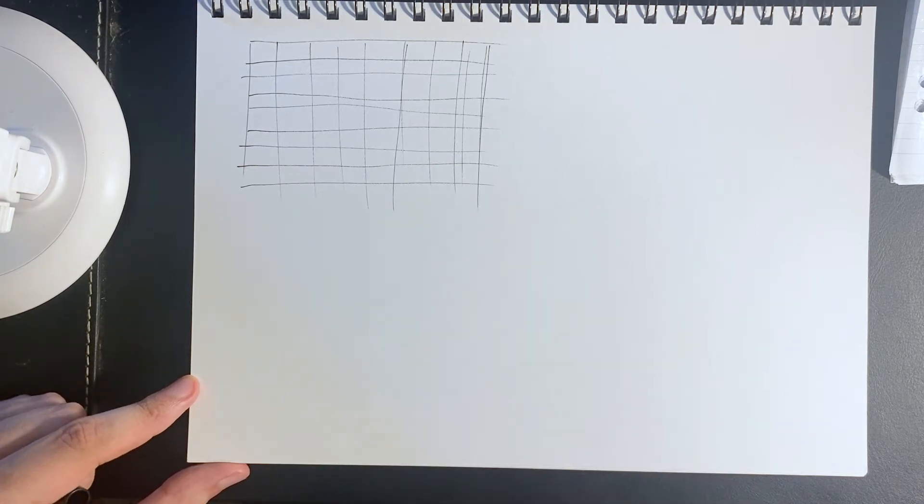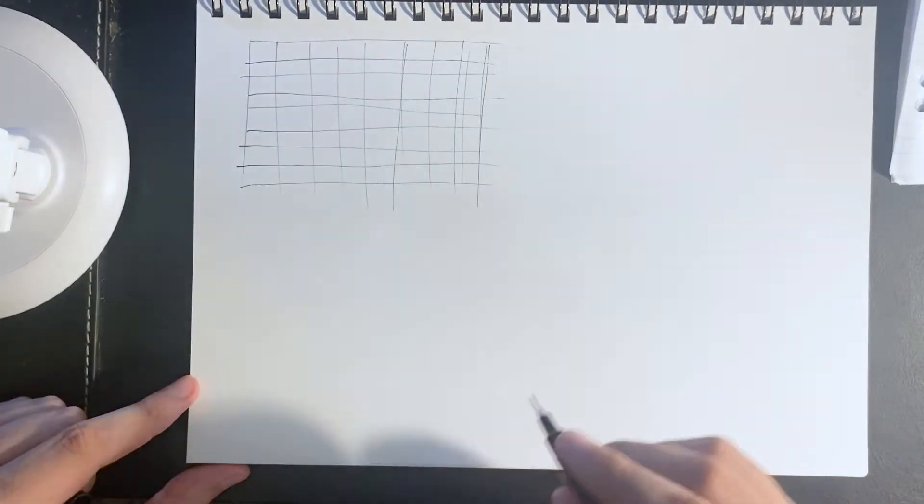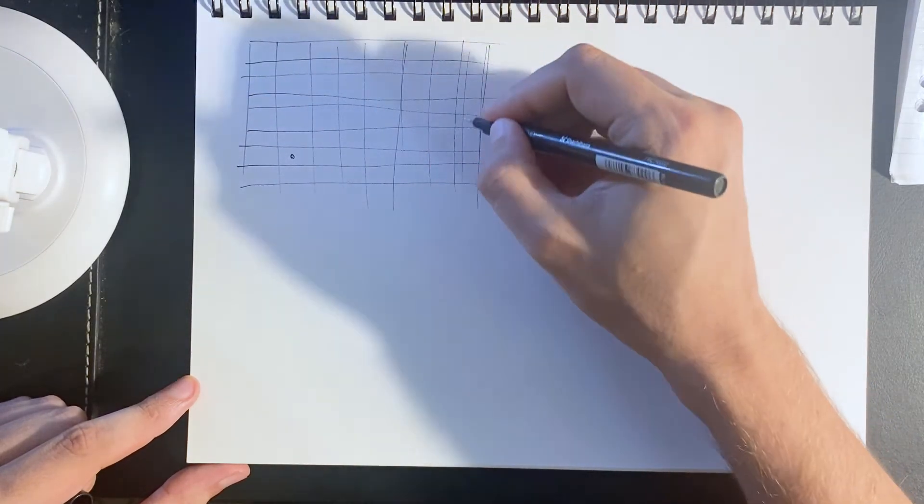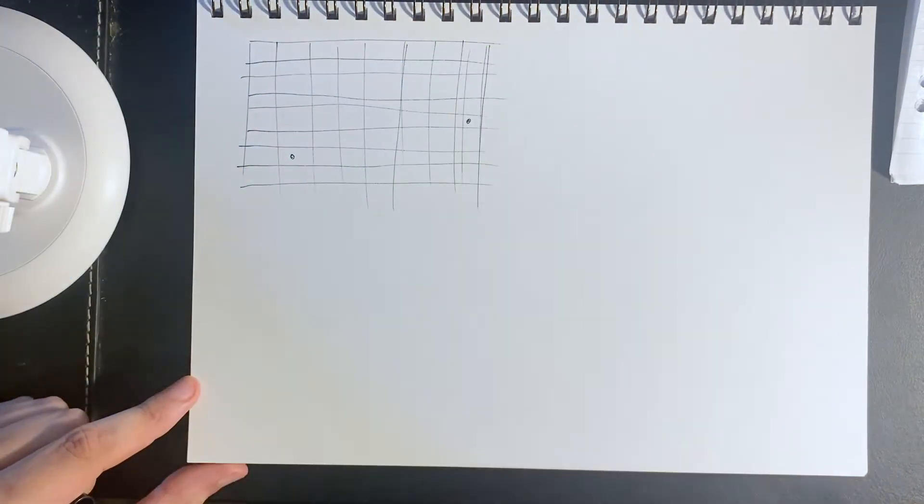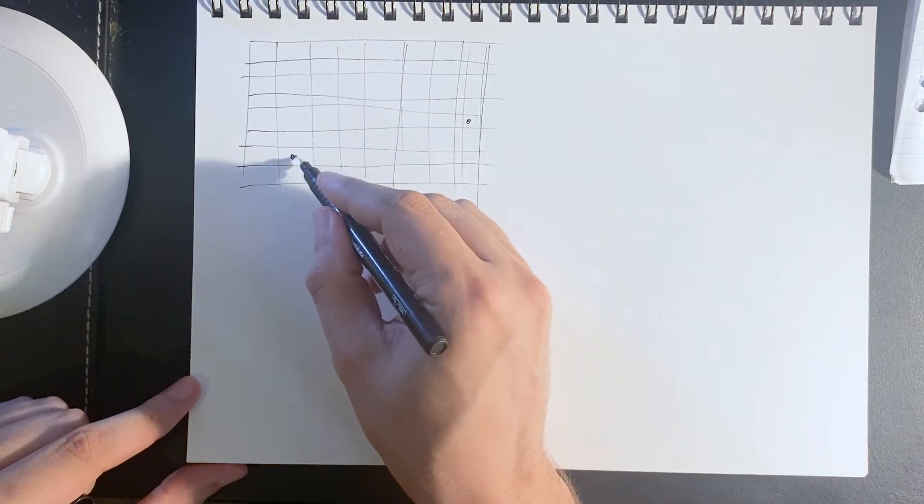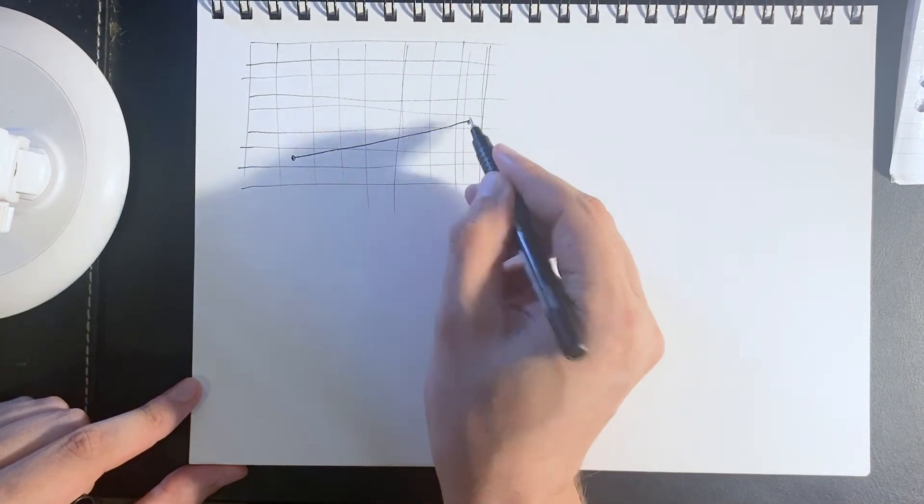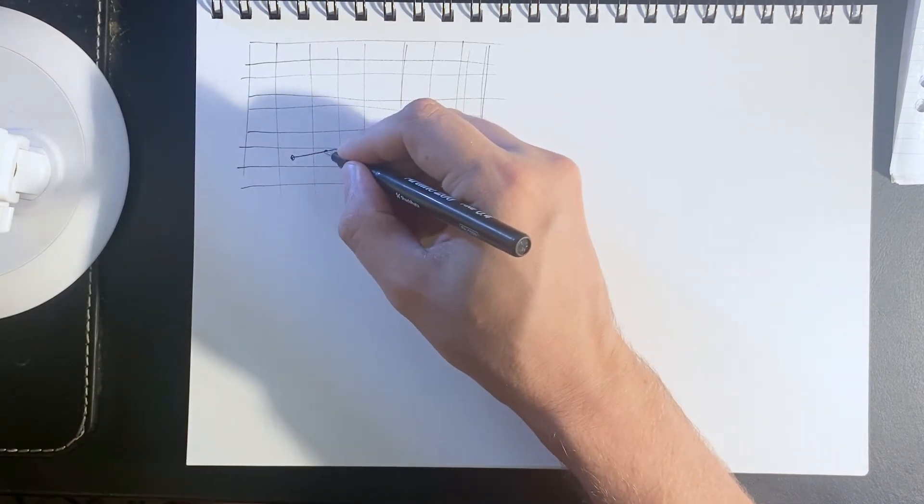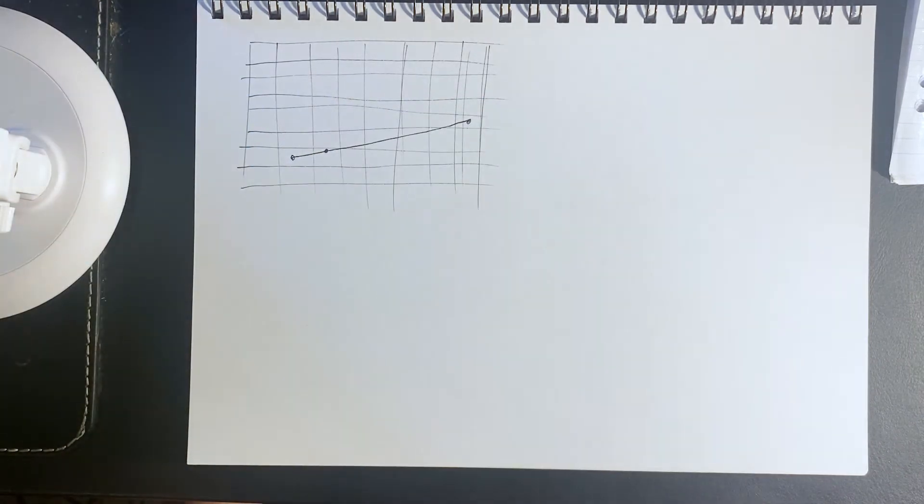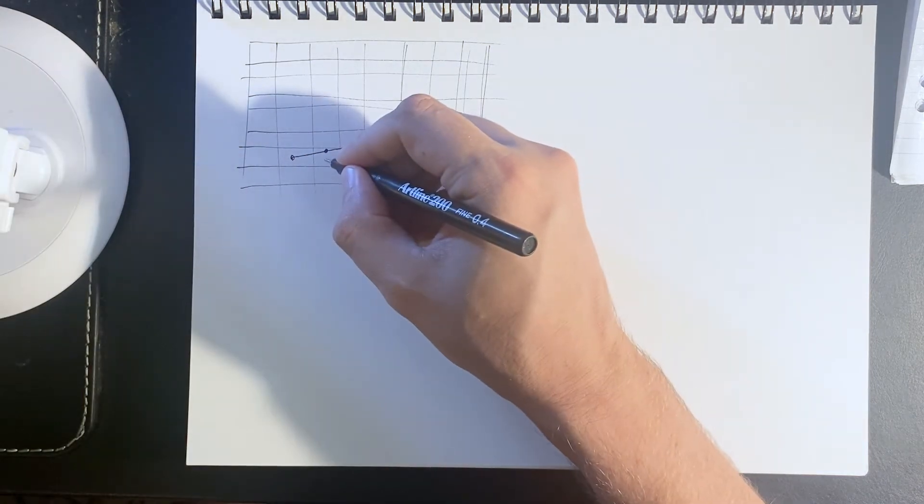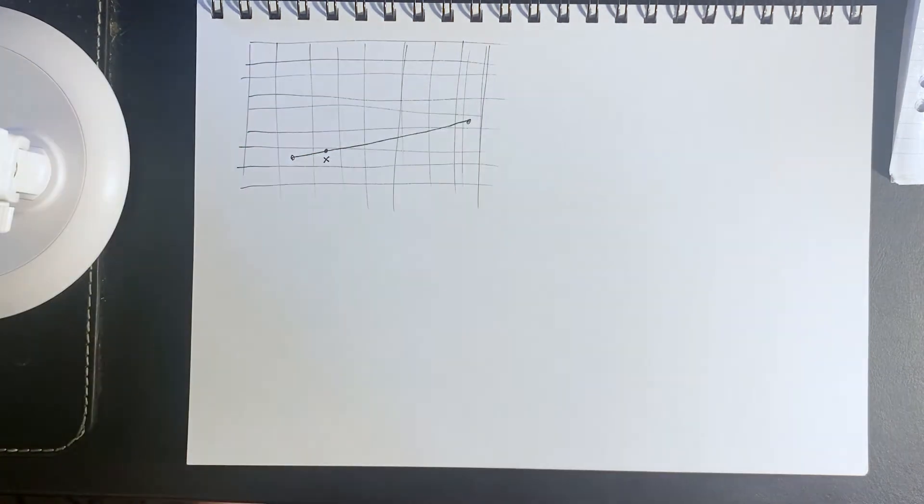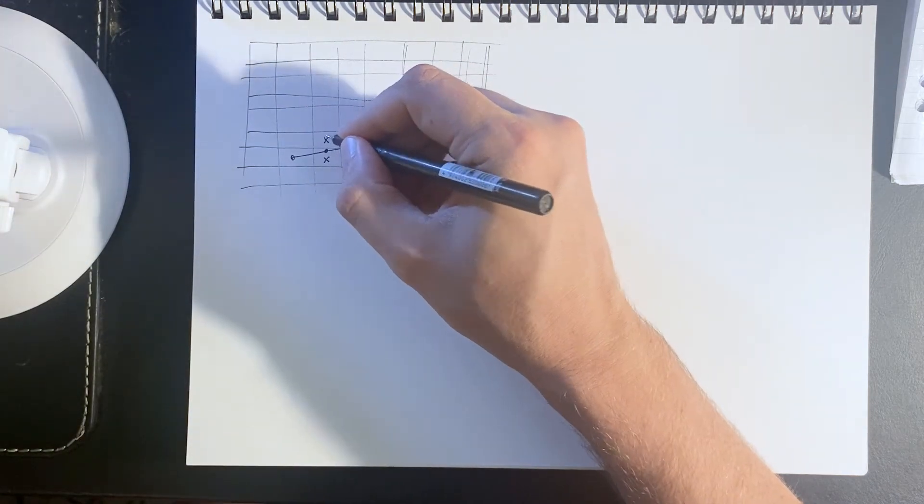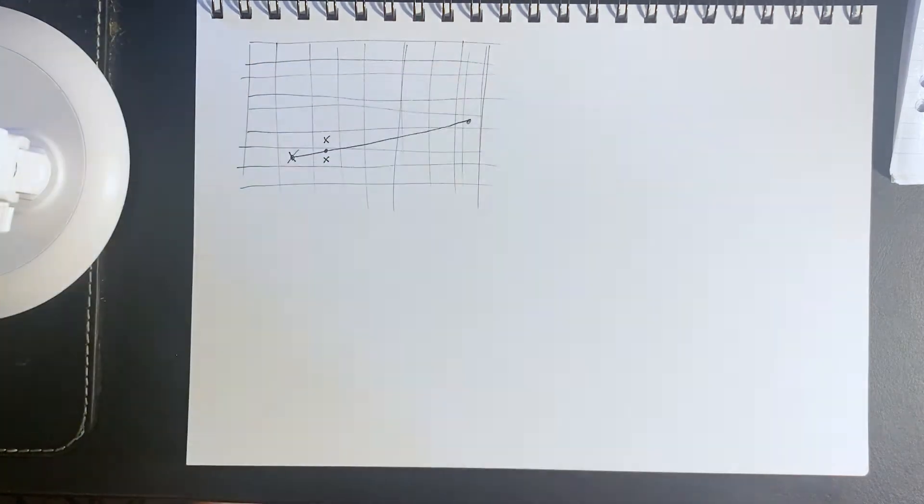Imagine a grid representing the screen or frame buffer and two points, and we want to draw a line between them. At each point we have a theoretical y value as well as a choice to either stay on the same y value or step up by one.